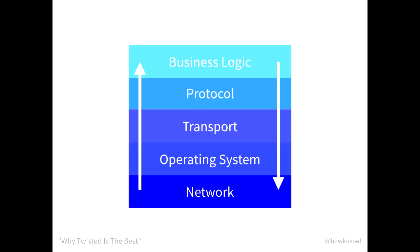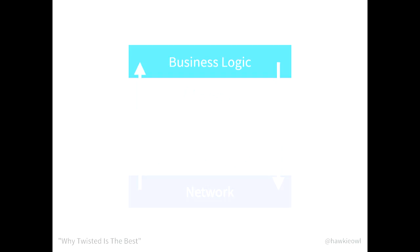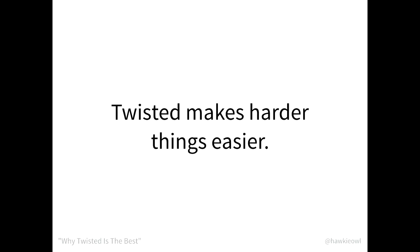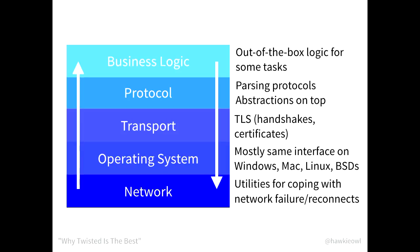Again, we've got all these layers, and we've only had to care about the business logic. Twisted makes harder things easier. It doesn't maybe make them as easy as some other things that are more specific, but it does make things that would otherwise be insurmountable quite easy to write. At the different layers, you've got your business logic, protocol parsing, transports like TLS, and mostly identical interfaces for dealing with the operating system. Twisted will let you paper over those OS differences. Twisted will also give you things like coping with network failure and reconnects, which a lot of networking code doesn't take into account because you test it locally, and it kind of works — except then you deploy it to the big bad web, and AWS goes down, and everything sets on fire.